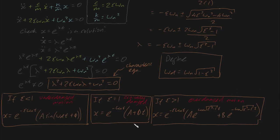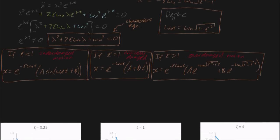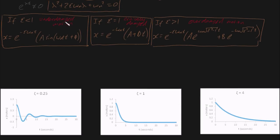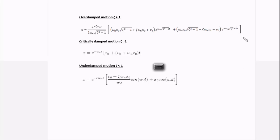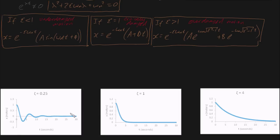Now let's consider an example of each case. Underdamped motion (ζ < 1) will oscillate back and forth, with amplitude gradually decaying according to an exponential relationship. Critically damped is the fastest to approach zero. Overdamped sluggishly returns to zero in its own time. As a final note, I've typed up the full equations for each case with the constants a and b solved using boundary conditions of initial displacement x₀ and initial velocity v₀. In the next video, I'll be showing you what logarithmic decrement is.